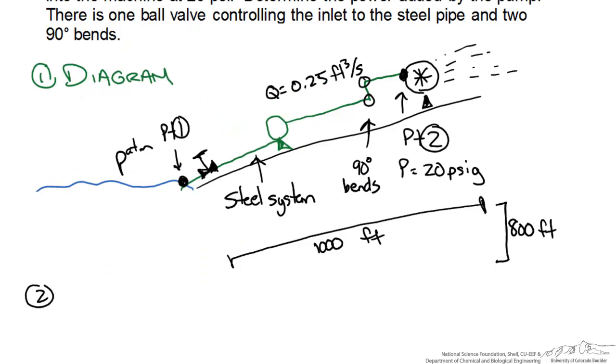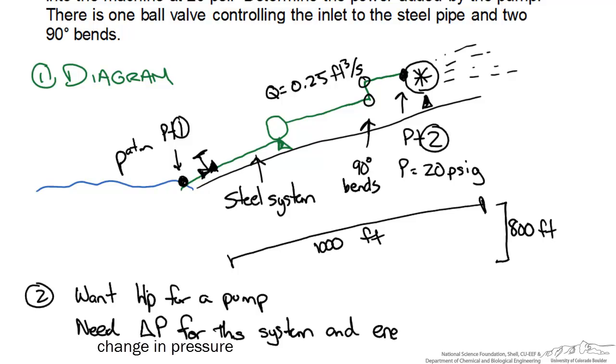This leads us to write down what we want: the horsepower for our pump. With any experience of problems like this, we know that means we need delta P for the system and energy losses. Power for a pump equals the shaft head for the pump, the specific weight of the fluid, and the volumetric flow rate. We already have two pieces of that information and just need to find the shaft work.